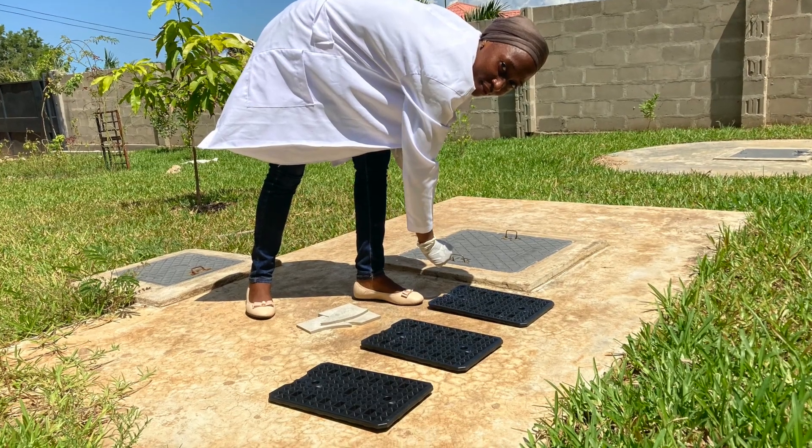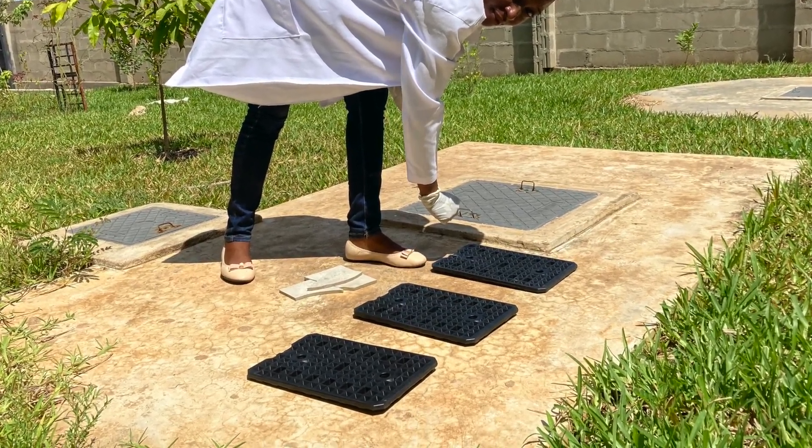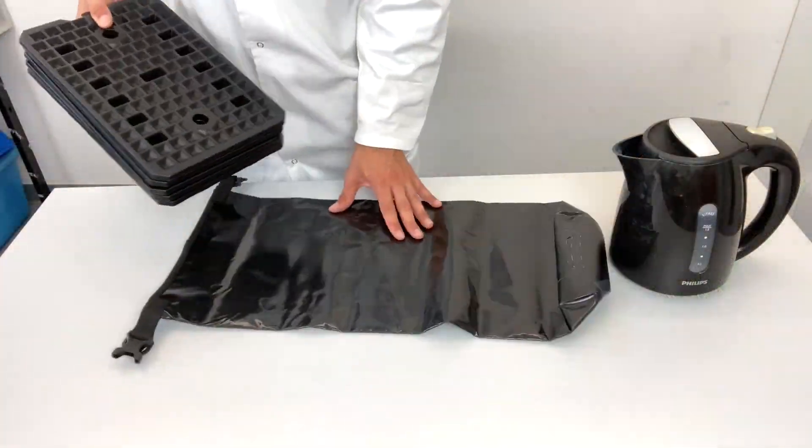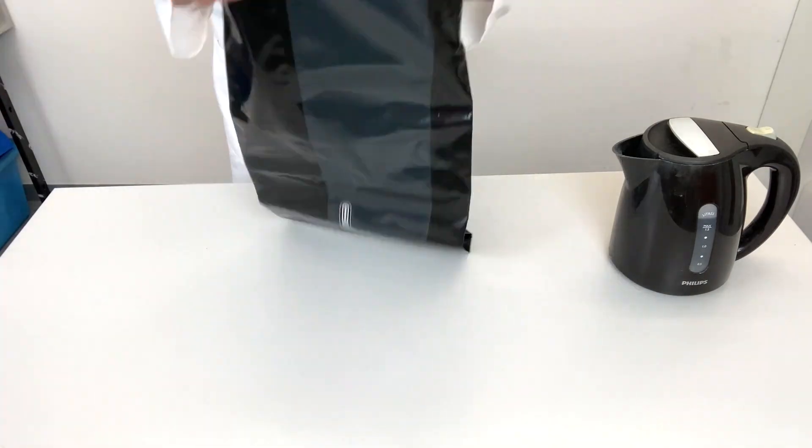This happens either by sunlight—simply place them into the sun for about 20 minutes—or by 4 liters of hot water hotter than 80 degrees.